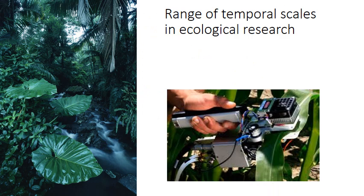As well as spatial scales, ecologists ask questions on a wide range of temporal scales. For example, the huge leaves found on plants in the family Araceae on the floors of tropical forests are large because they receive very little sunlight under the canopy. The sunlight they do receive comes in brief flecks as trees move above them. Ecologists can ask how a fleck of light lasting a single second affects rates of photosynthesis — using machines like the LiCor gas exchange meter to measure photosynthesis over periods as short as one second.